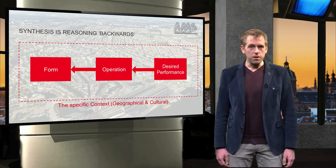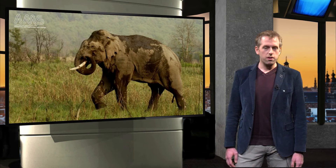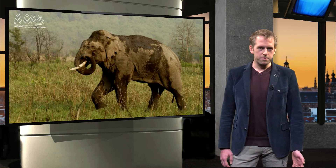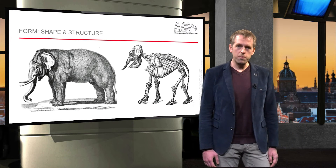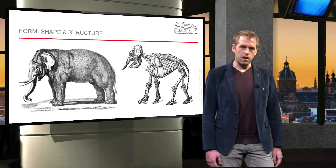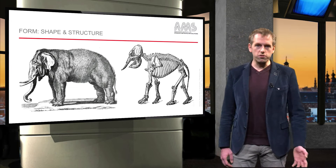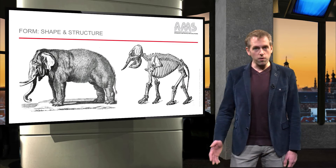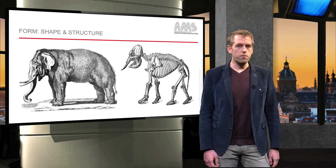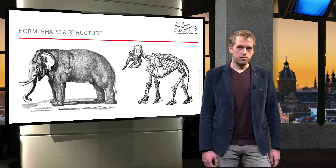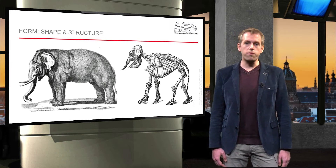Let me illustrate these elements by using a metaphor of an elephant. Form is about both the shape and structure of the elephant. On the left you see the overall shape; the image on the right shows the underlying structural features of the elephant. So there are various ways of defining form.